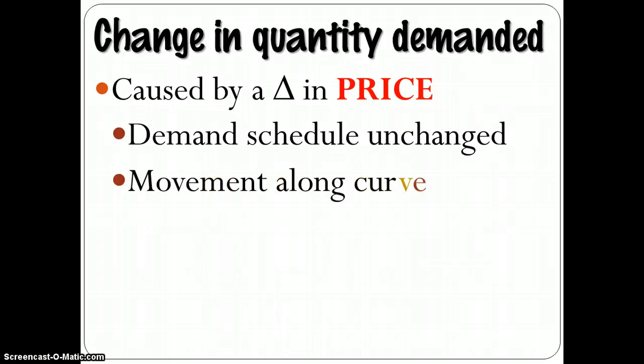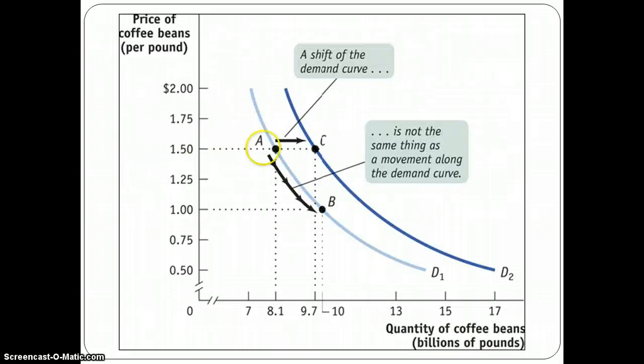And so this is what we call a movement that is different from a shift in demand in which the amount of goods that I demand changes at a given price. And that would be a shift. So in a movement, though, we're talking about a change in price. And in this case, the price dropped from $1.50, then we move from point A to point B. If the price dropped from $1.50 to $1, then I would demand not 8.1 billion pounds of coffee, but now 10 billion. So that's a movement along.